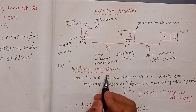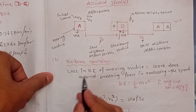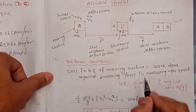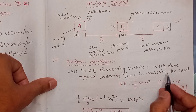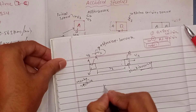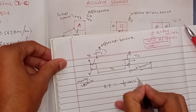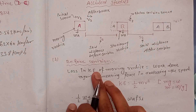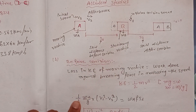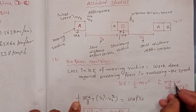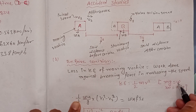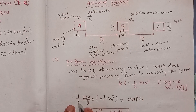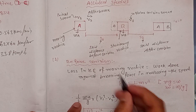Before collision condition: the loss in kinetic energy equals the work done against braking force, which reduces speed. What is kinetic energy? It is 1/2 mv². Now, for the before collision condition, the kinetic energy is 1/2 mv², and the mass is W/G — so mass equals W divided by G.